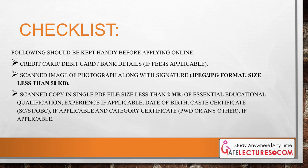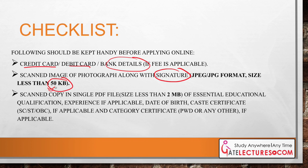Before applying for NIELIT, make sure you have your credit card, debit card, or bank details ready. You also need a scanned photograph along with your signature in JPG format of less than 50 KB — this is a critical requirement as images larger than 50 KB are not accepted. Additionally, a scanned copy of essential educational qualification documents, date of birth, and caste certificates must be compiled into a single PDF file less than 2 MB.